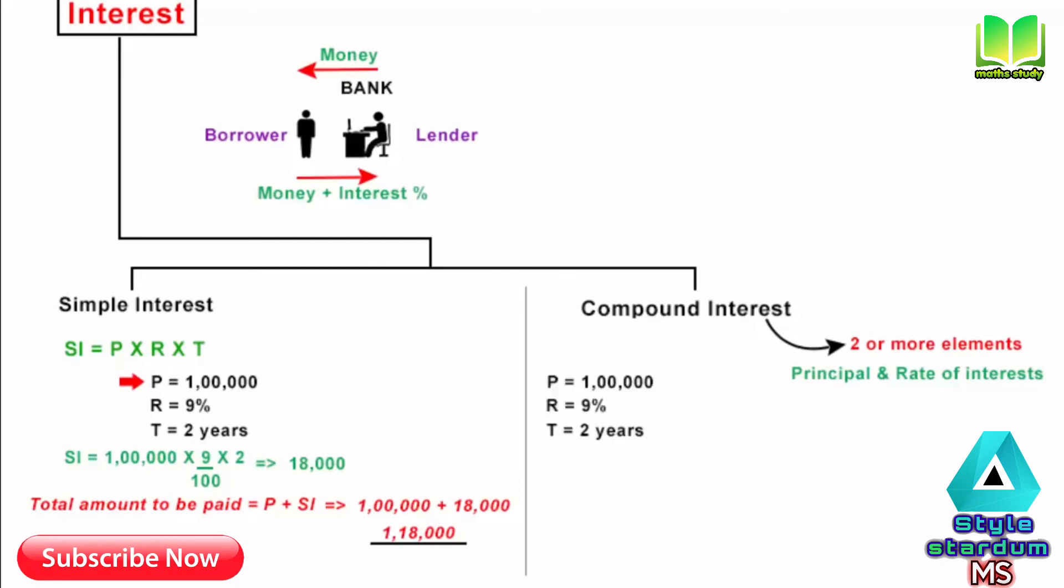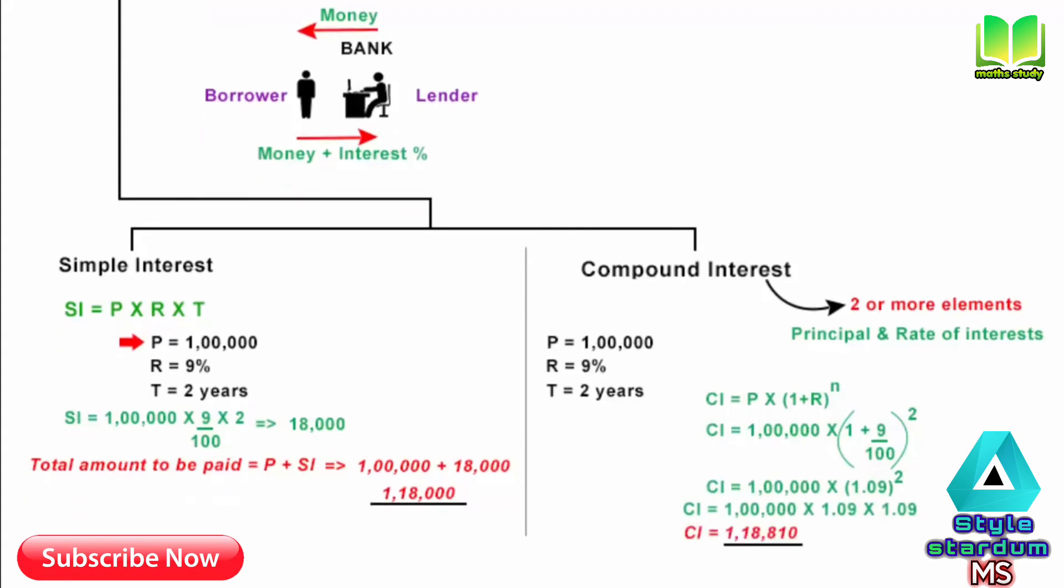We'll take an example. Again you took 1 lakh rupees as a student loan with 9% annual interest for 2 years. Now the amount of compound interest that you have to pay is going to be 1 lakh multiplied by 1 plus rate of interest to the power of N. N is the number of years, which here is 2 years. If we calculate all this, it comes to 1 lakh 18,810 rupees.